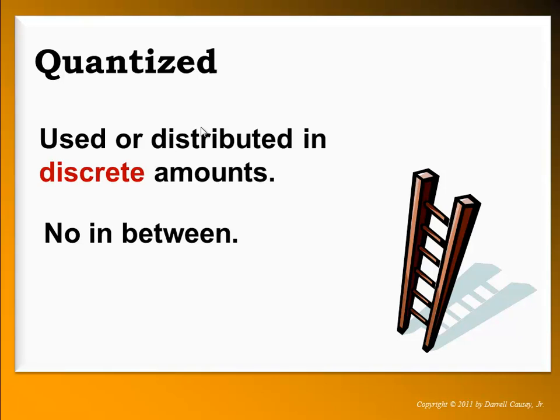When you go to a restaurant, let's say you go to McDonald's. When you go to McDonald's, you don't order one and a half cokes or two and one third burgers. You order three cokes or two burgers or four orders of fries. There are no in-betweens. There's no fractions. There are just discrete amounts. And that's what we mean by quantized.